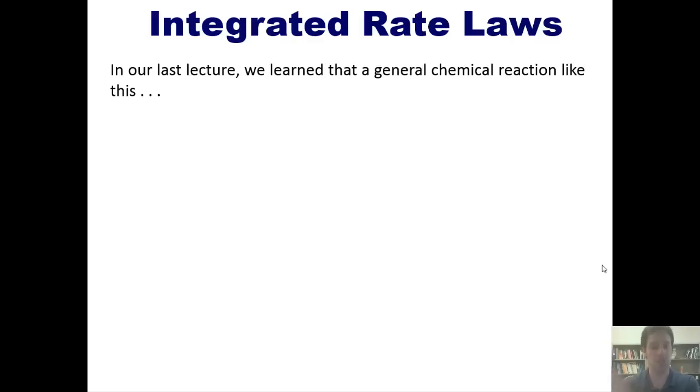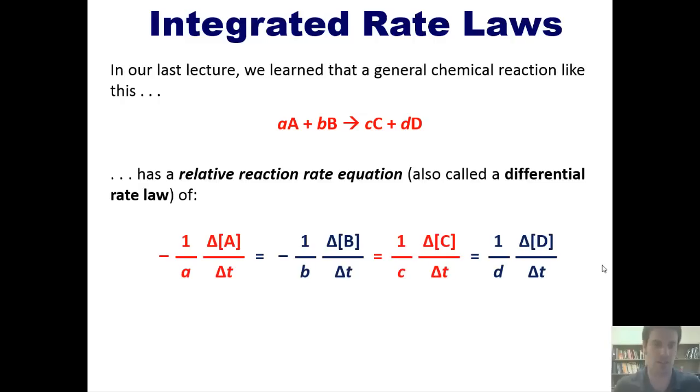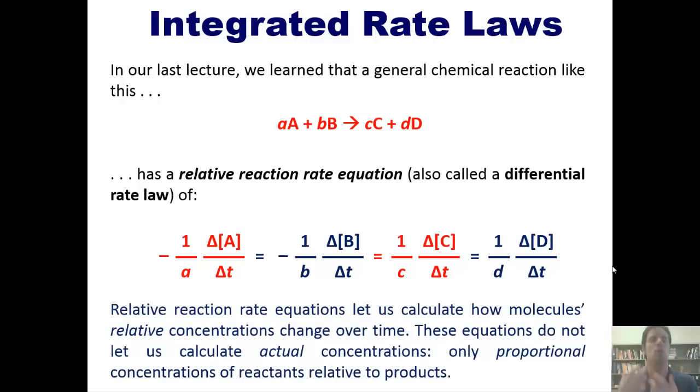In our last lecture, we learned that a general chemical reaction, such as this one, has a relative reaction rate equation, which is also called a differential rate law. You'll notice that we have negative signs in front of the reactants' changes in concentration over time and positive signs in front of the products' changes in concentrations over time, because reactants disappear as the reaction proceeds while products appear. Relative reaction rate equations let us calculate how molecules' relative concentrations change over time. These equations do not let us calculate actual concentrations, only proportional concentrations of reactants relative to products.